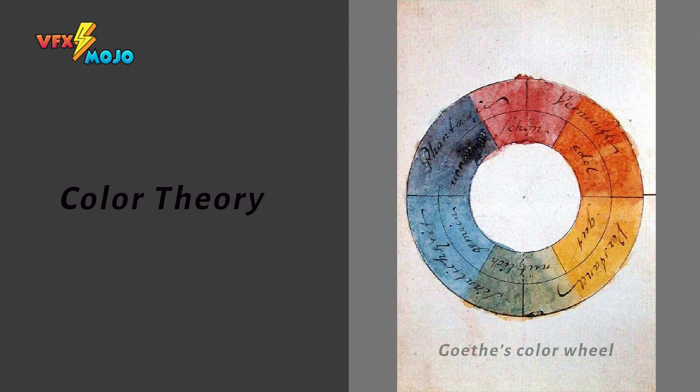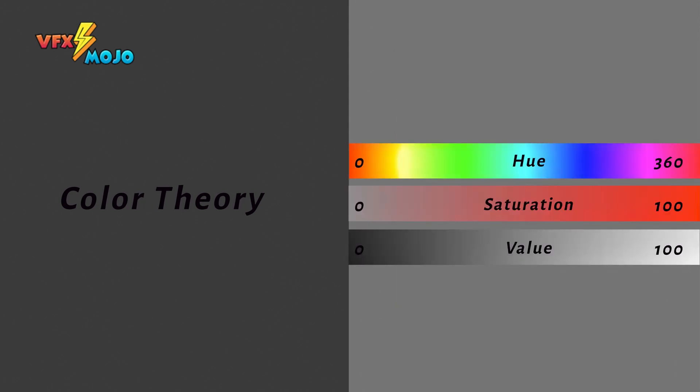Color theory in itself is a vast topic well beyond the scope of this course, but knowing the basics will be very helpful. I won't go into too much detail as there is a lot of information online. At minimum, look at terms like hue, saturation, and value, as these are often used when talking about lighting. Hue can also be called color, tone, shade, or tint. Saturation defines how colorful or saturated a color is. Value — sometimes called brightness or lightness — defines how bright or dark the light is: the lower the value, the darker; the higher the value, the brighter the source.